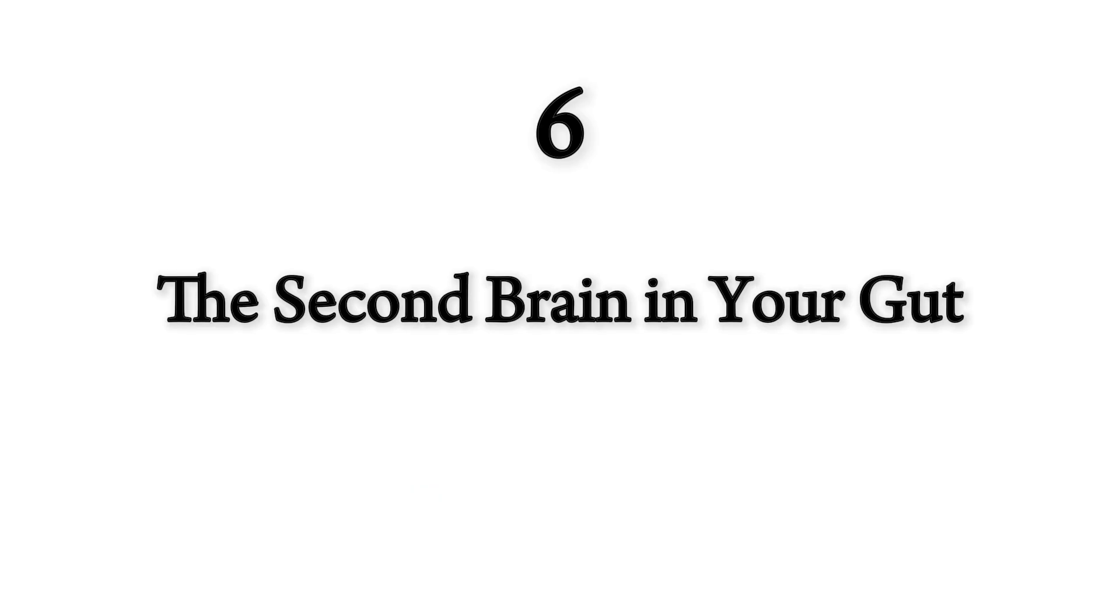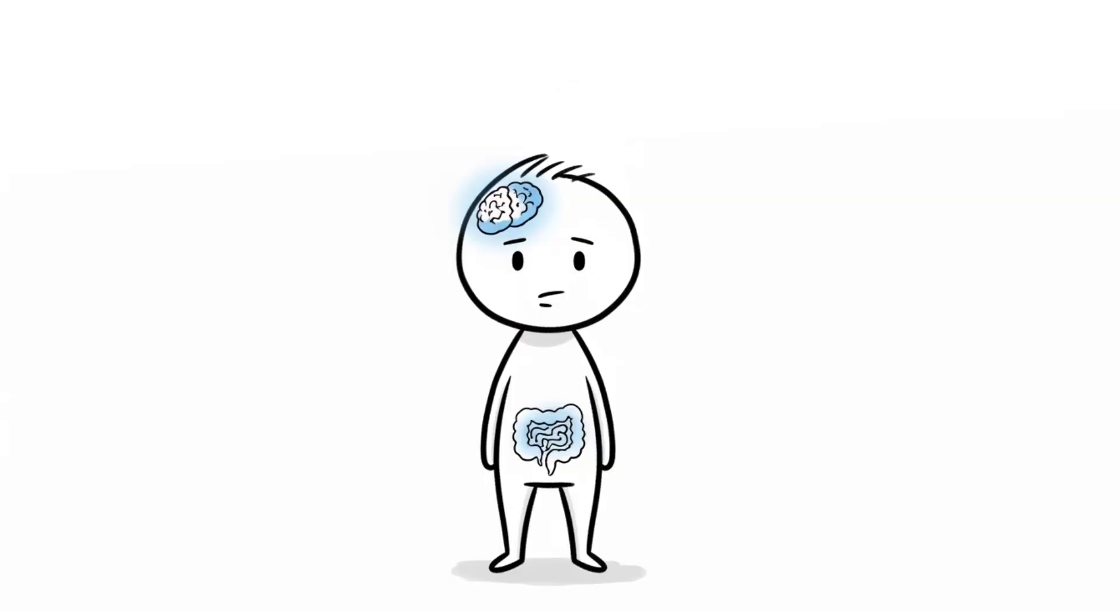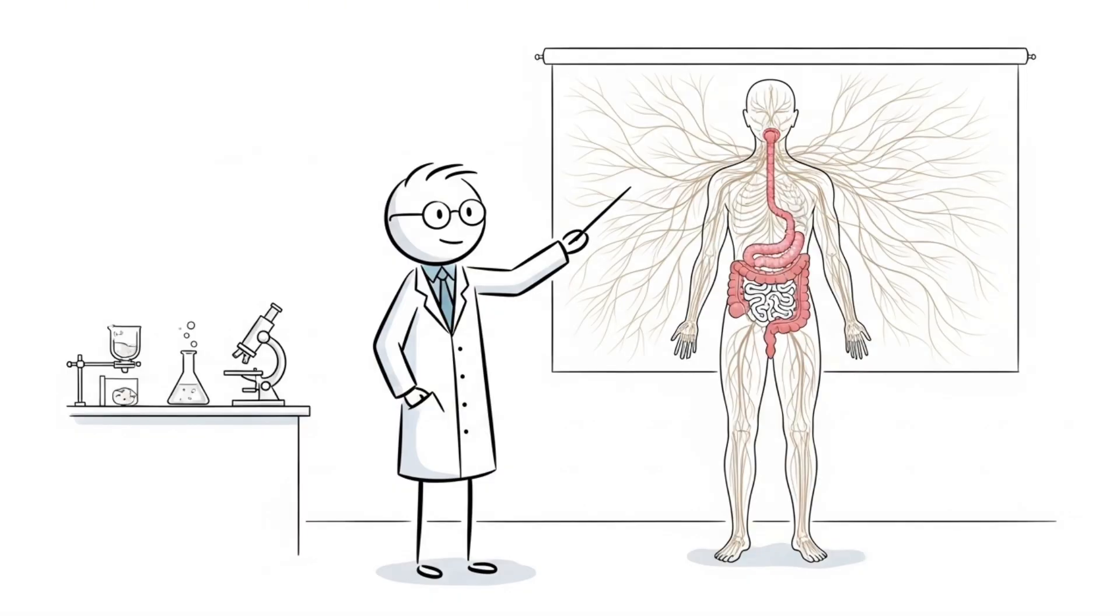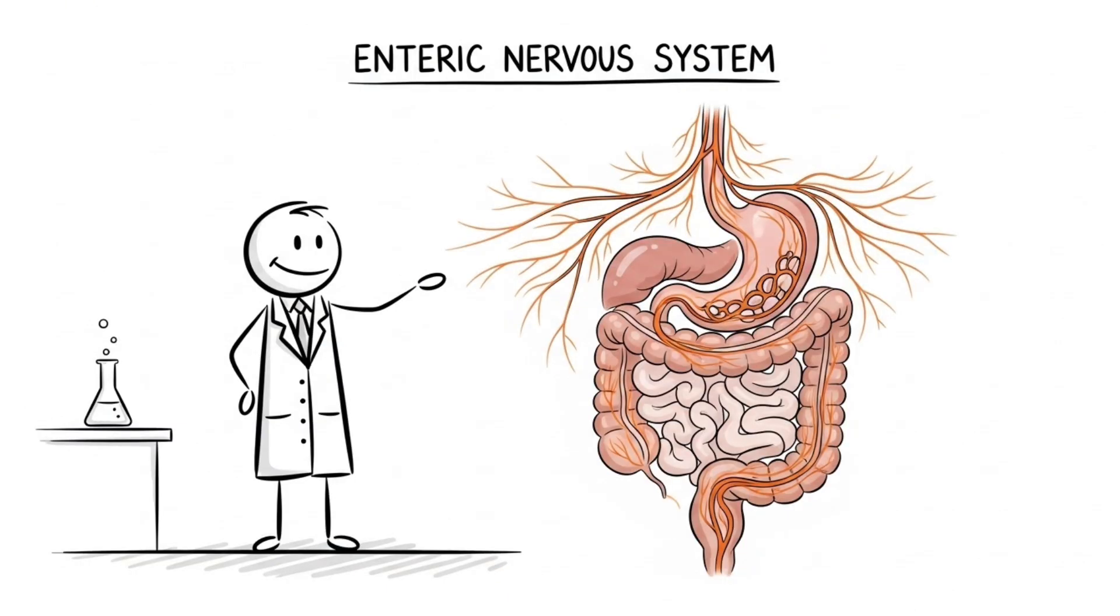Number six, the second brain in your gut. Your brain isn't just in your head. Yeah, that probably sounds ridiculous, but it's not. Wrapped around your digestive tract is an entire nervous system. Scientists call it the enteric nervous system.